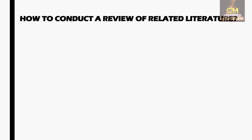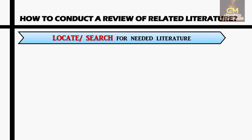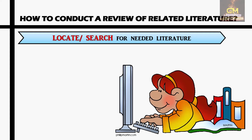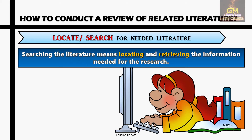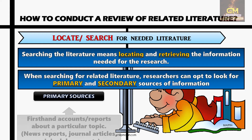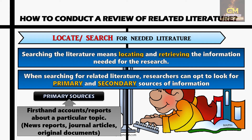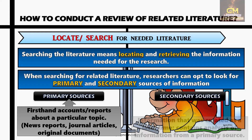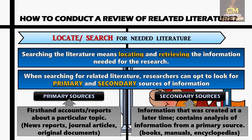Once we are able to identify the key terms, we proceed with locating or searching for the needed literature. Searching the literature means locating and retrieving the information needed for the research. When searching for related literature, researchers can opt to look for primary and secondary sources of information. Primary sources are first-hand accounts or reports about a particular topic — examples include news reports, journal articles, or original documents. Secondary sources are information created at a later time, containing an analysis of information from a primary source — examples include books, manuals, or encyclopedias.